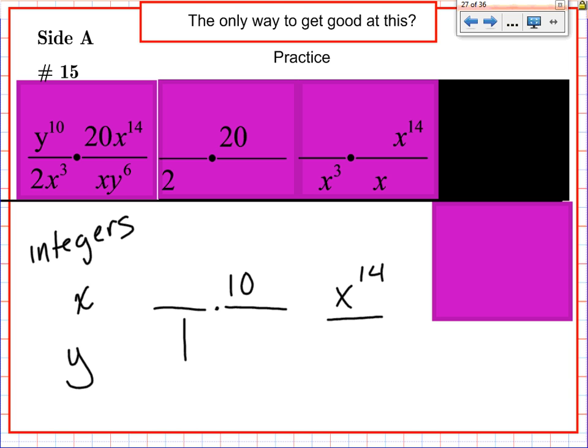x to the 14th over x to the 4th. Do we know what that's going to reduce to? Well, that'll reduce to x to the 10th. It may be helpful to put an over 1 there, so you remember that that 10 goes in the numerator.